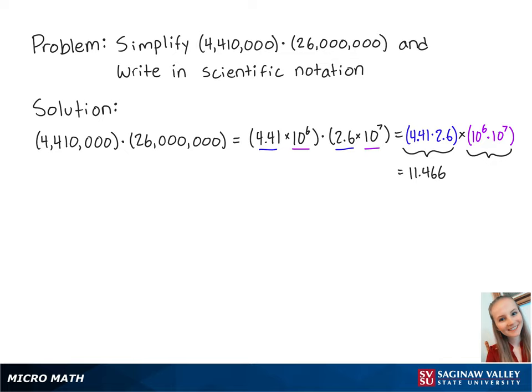we know that 10 to the 6th times 10 to the 7th is equal to 10 to the 6th plus 7, which equals 10 to the 13th. So all of this is now equal to 11.466 times 10 to the 13th.